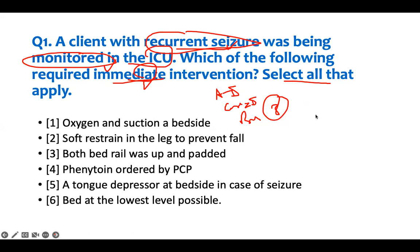Then tell yourself: what is the key thing about this? If somebody is having seizures and is being monitored, what do you do? There's a pre-seizure stage, during the seizure, and after the seizure. This patient already had a seizure and is not having one right now. So you have to plan in case they have it again so you're already ready — that's your rewrite thinking.